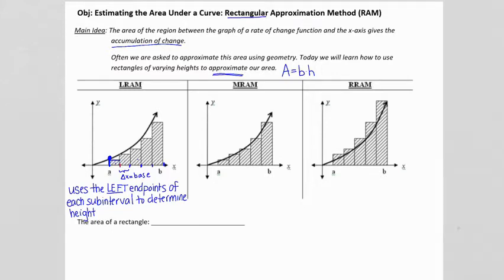On the next subinterval, the left side is where the height of the rectangle is being drawn. And on each subsequent subinterval, it's the y value from the left side that determines the height — the y value on the left side is what determines the top or the height of our rectangles.